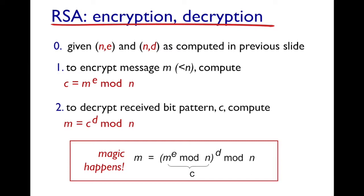To decrypt the cipher text, we take c, raise it to the power of d, and compute mod n — this gives us back m. This might seem like magic, but it is all due to modular arithmetic. We are computing (m^e mod n)^d mod n, and we get m back. We'll see how this happens in a later slide.